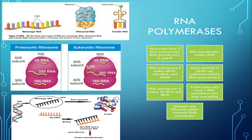RNA polymerase 2 also makes microRNA, which causes gene silencing by degrading mRNA — you can see that microRNA binds to the messenger RNA and degrades it. RNA polymerase 2 also makes small nuclear RNA, which is involved in mRNA splicing as well as transcription regulation.